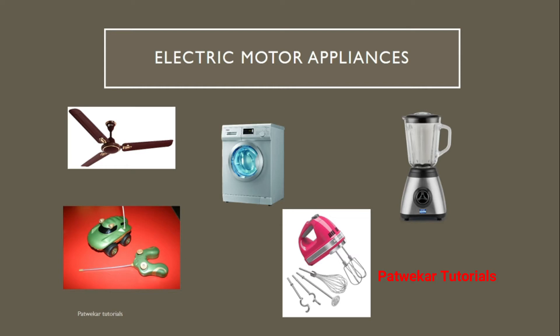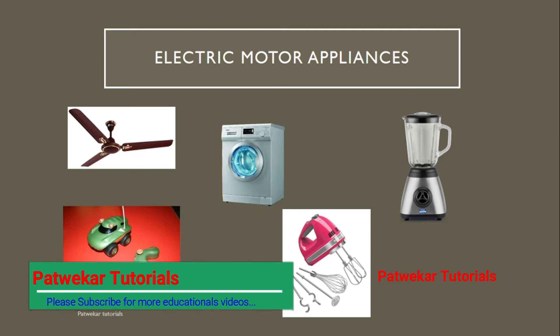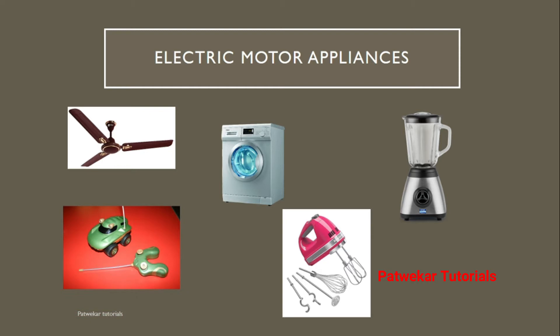Electric motor appliances — you must have seen appliances like fan, washing machine, mixer, juicer, grinder. These are all electric motor appliances where we switch on the current and they start running automatically. This is possible because of the electric motor. The motor keeps producing mechanical force and keeps rotating.